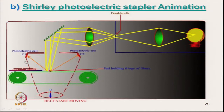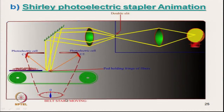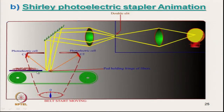When the fibre fringe is away from the sensing point, both C1 and C2 receive the same signal — the difference is zero and there is no deflection. As the fringe moves under the sensor, reflections begin. At the particular line where intensity suddenly changes, maximum deflection occurs. Similarly on the other side, as the fringe moves out, deflection occurs in the opposite direction.